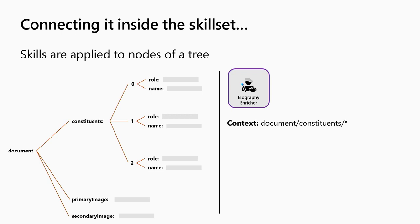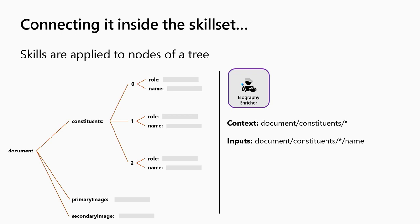The first thing I do is provide a context: on what element do you want me to work? I refer to this as a path in the tree — essentially telling it the type of nodes I want to enrich. I want to enrich each of the constituents — that's what the star at the end means: document/constituent/*. Take each constituent and apply this enrichment step to it. It needs inputs: a path like document/constituent/*/name. I also get to define what I want the outputs called in my new tree — I want to call it 'biography.'